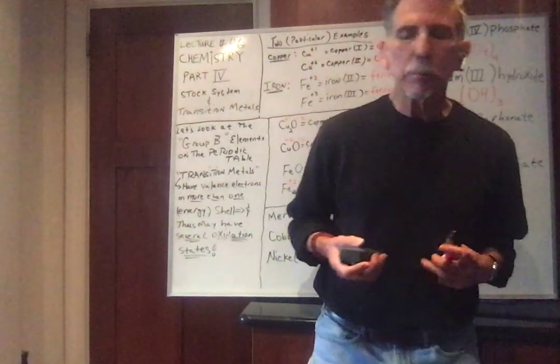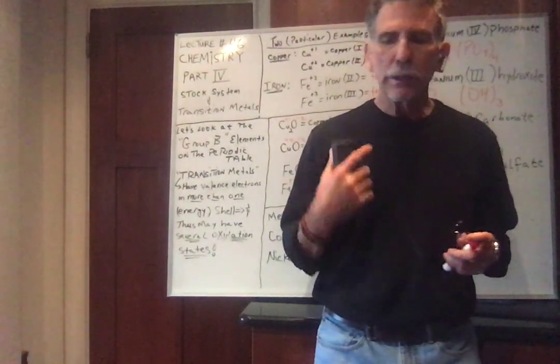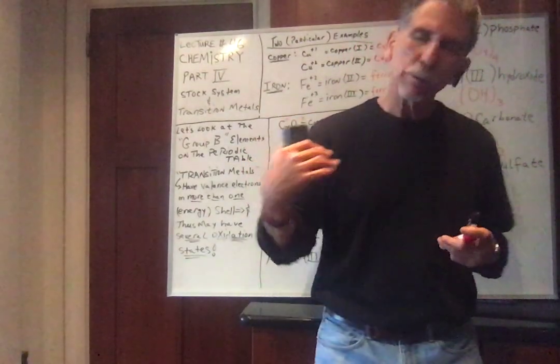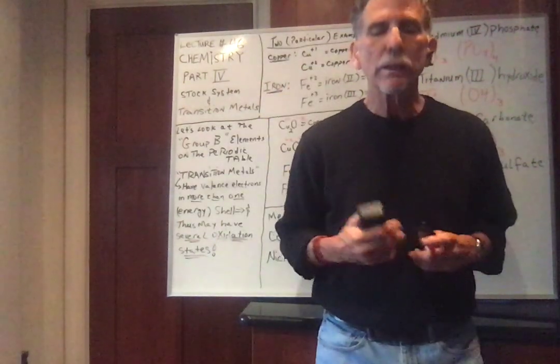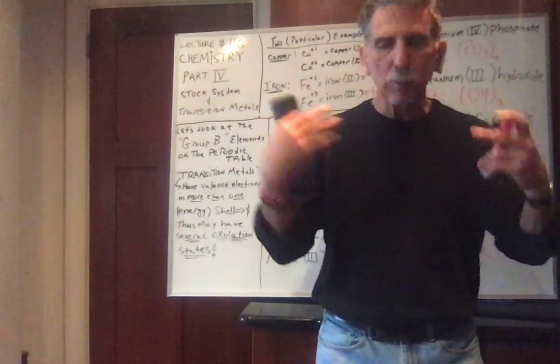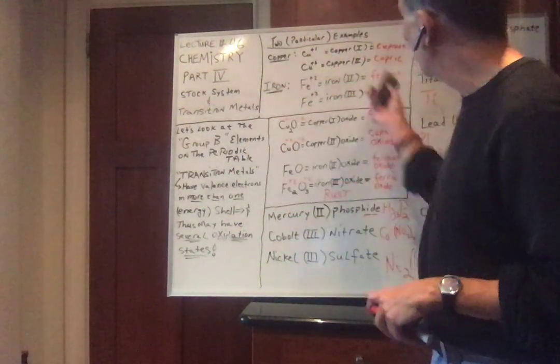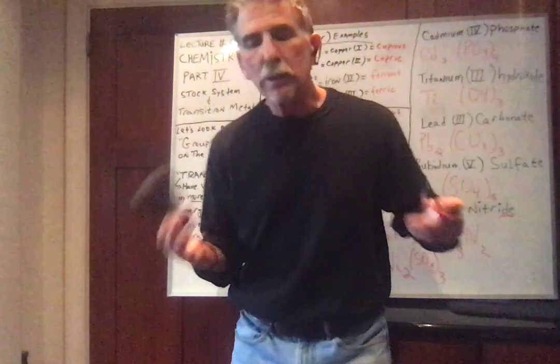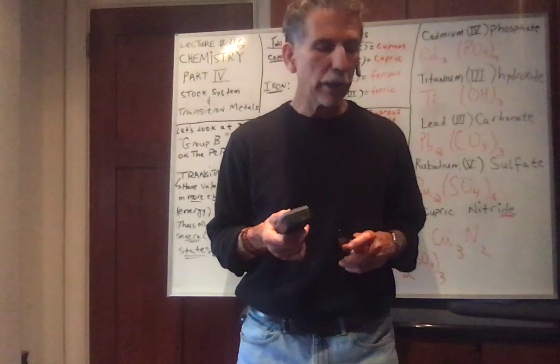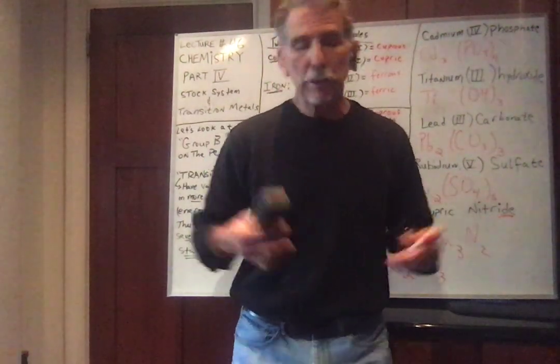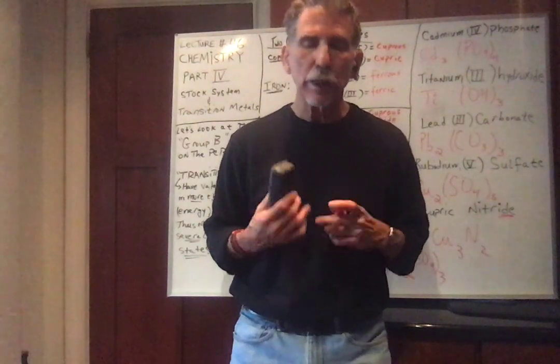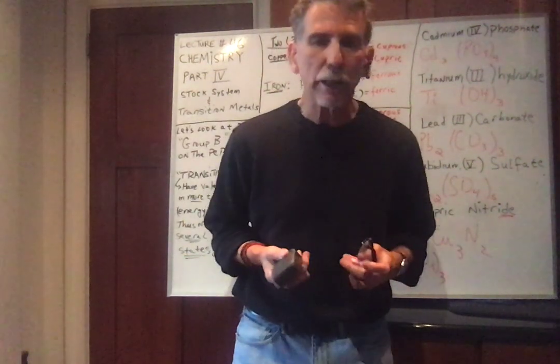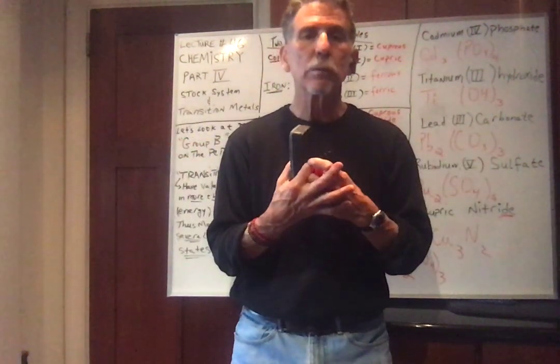So whenever I give a problem or an example or a test question dealing with the transition elements, the group B elements, it will always be in the stock system. I will not try to have you guess what the oxidation state is for a group B element. I will tell you using the stock system by putting the numbers in parentheses, the oxidation number. And then we treat it just like we did all the other ionic compounds. So that's not so bad. So we've done pretty much everything with ionic. Remember, ionic compounds give and take. So you have two ions. If you give, you're a cation. If you take, you're an anion. So we have two ions together.